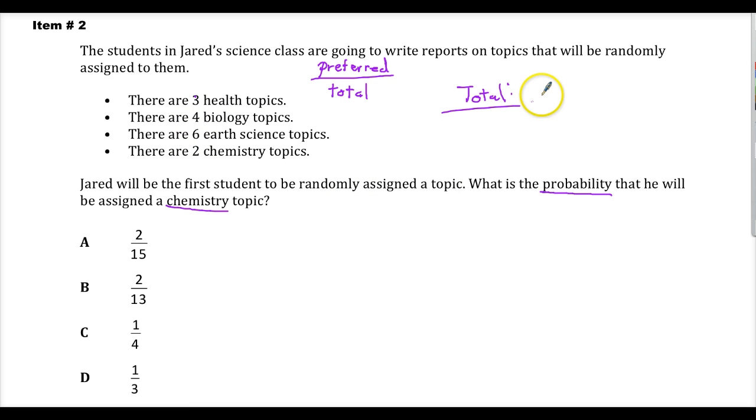Here we go. So there's my total. To find my preferred, I just go to the question. It's really what the question prefers. And it wants to know about a chemistry topic. So fifteen, and there are two chemistry topics.